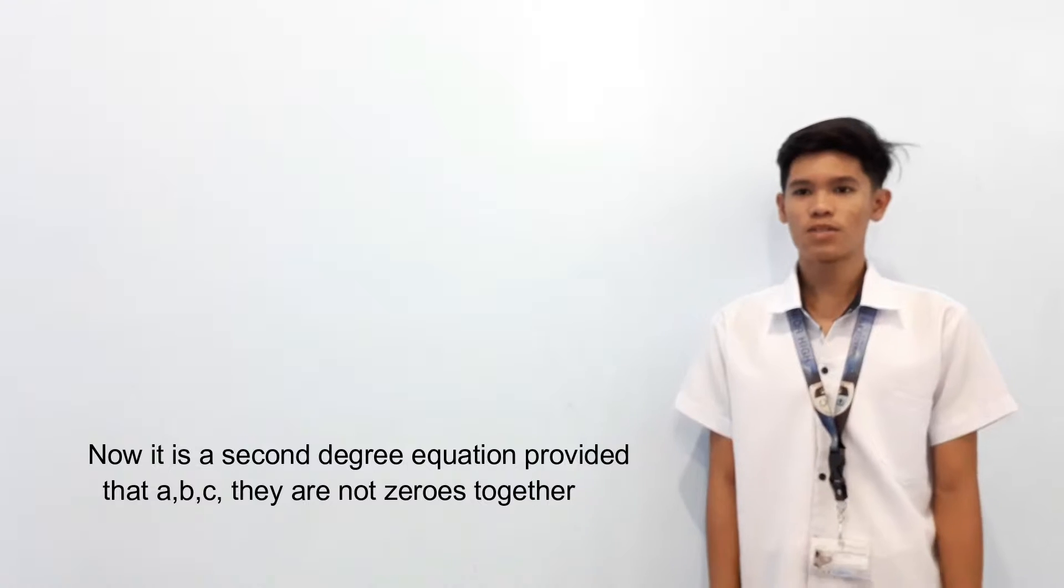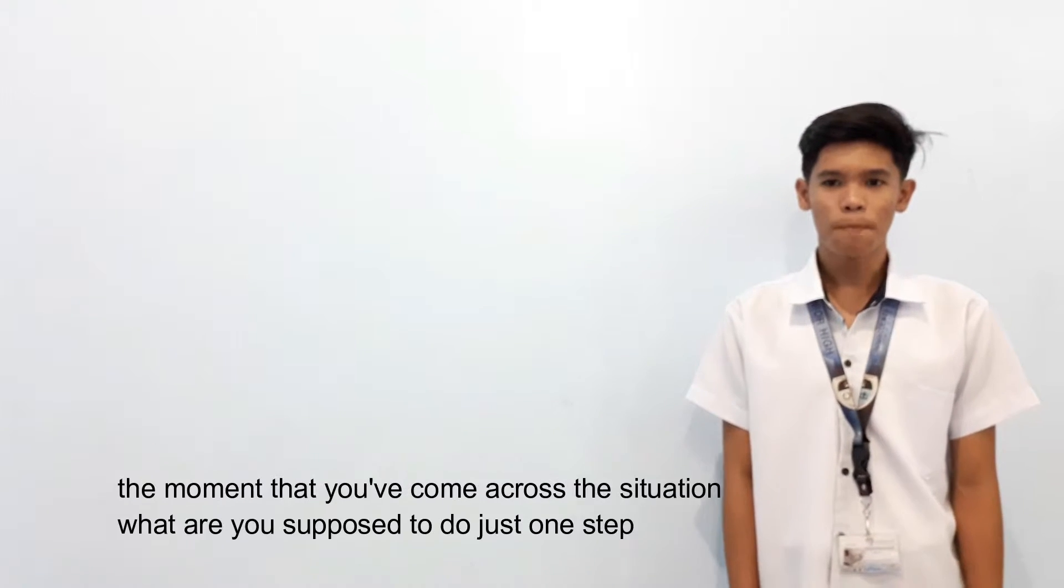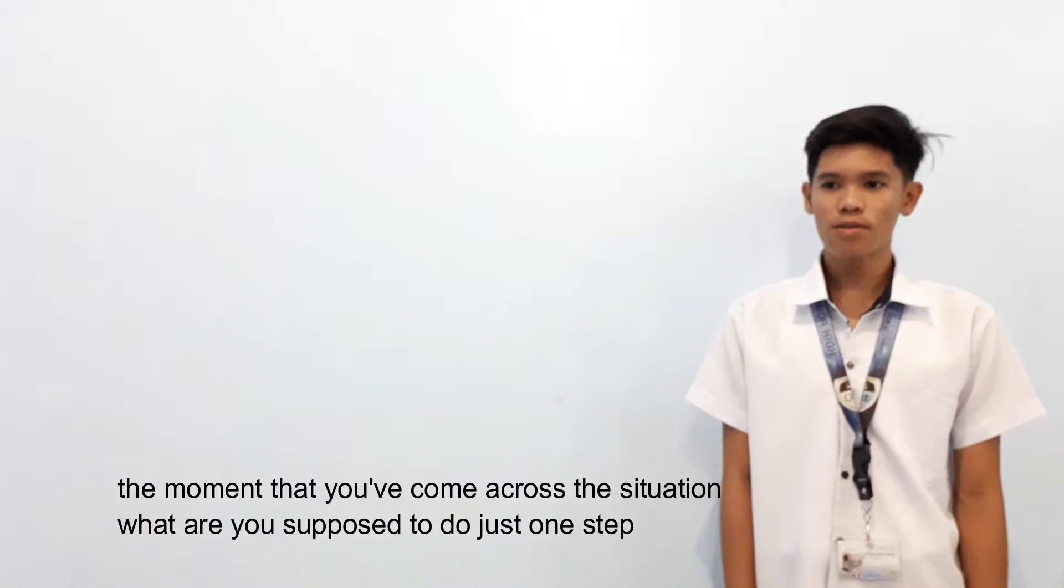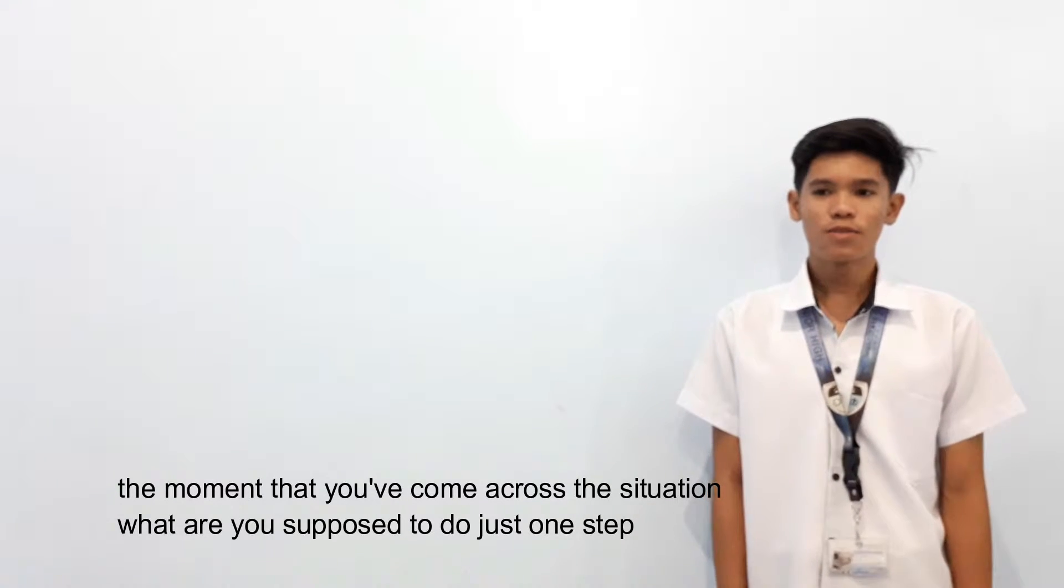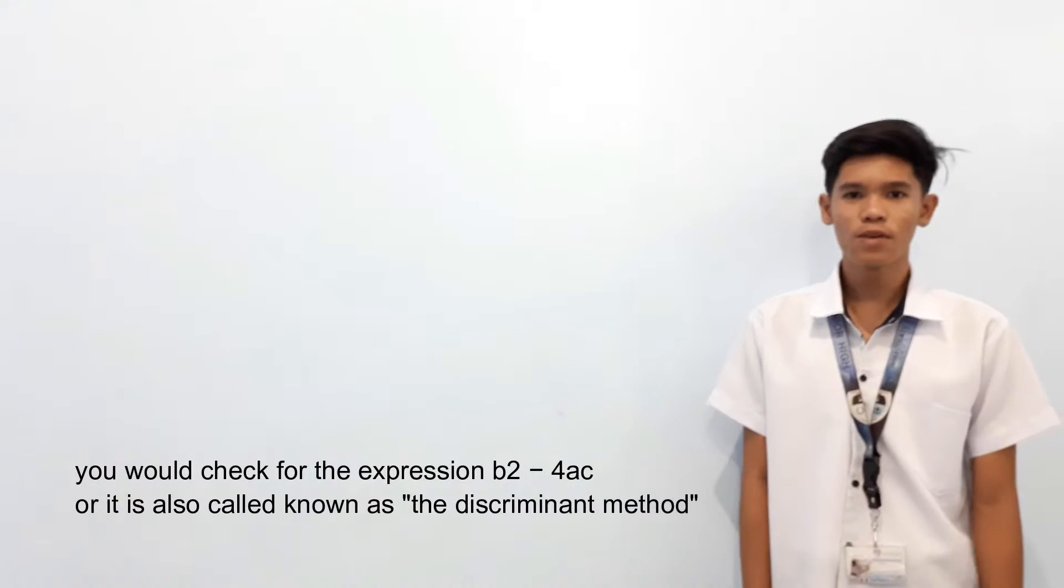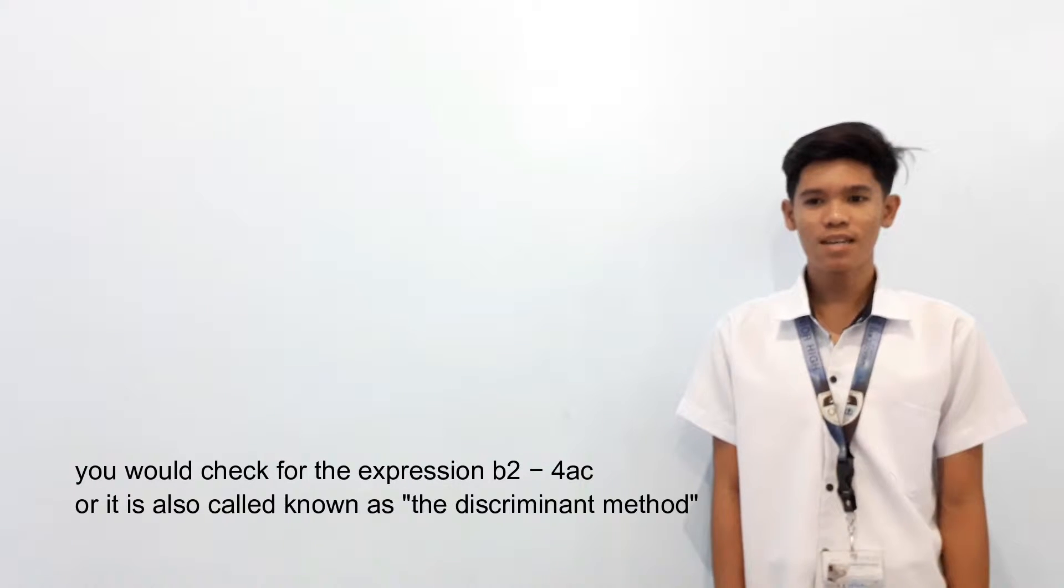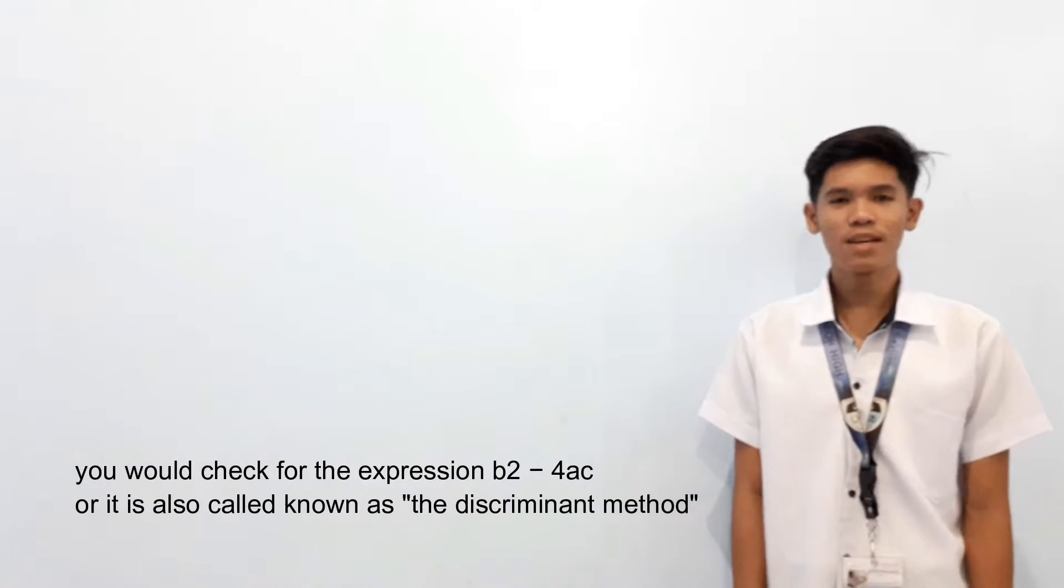Now, it is a second degree equation provided that A, B, and C are not zero together. The moment that you come across this equation, what are you supposed to do? Just one step: you will check for the expression B² - 4AC, also known as the discriminant method.